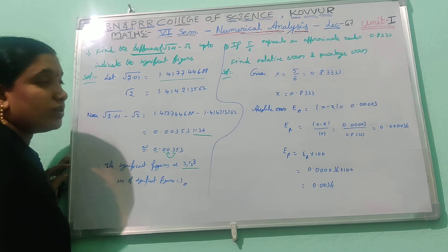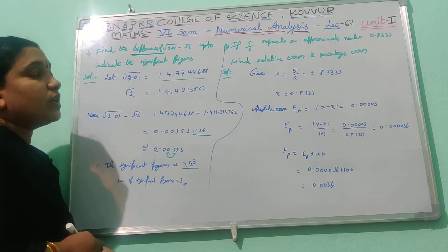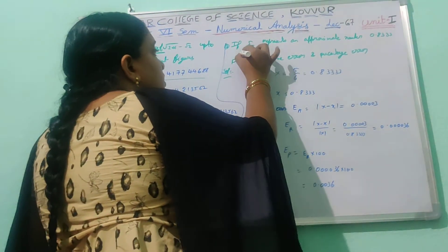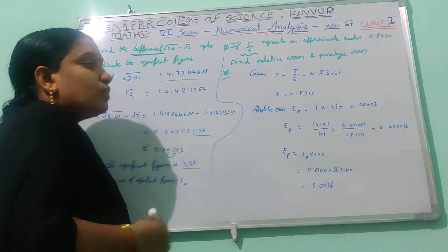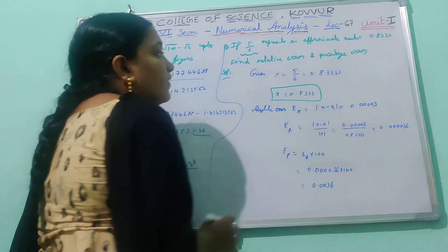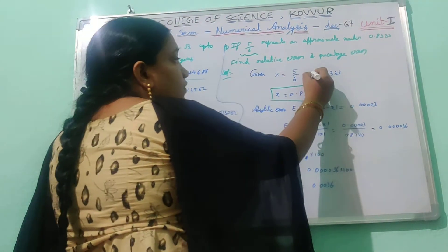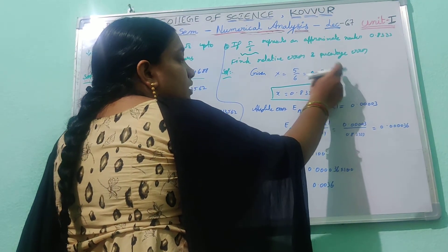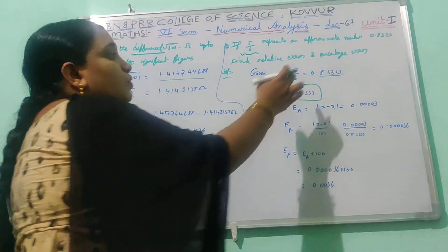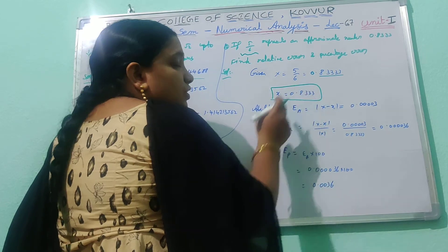The number of significant figures: in 0.00353, the zeros before the non-zero term are not counted — only the non-zero terms 3, 5, 3 are counted. So number of significant figures is 3. Second problem: if 5/6 is represented approximately as 0.8333, find the relative error and percentage error. The exact value x = 5/6, and its decimal value is 0.83333 (repeating 3s). The approximation value is 0.8333.